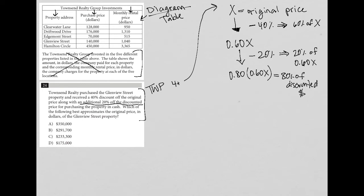The question goes on to say which of the following best approximates the original price in dollars of the Glenview Street property? Well, I know that this 0.8 times 0.60x is equal to the $140,000 paid for the Glenview property. That's how we arrive at this number. They first got 40% off and then 20% off of that and then that's what they paid, $140,000. So this is the translation of the entire question and now we just have to simplify and solve for x in order to figure out the original price because this x value is the original price.